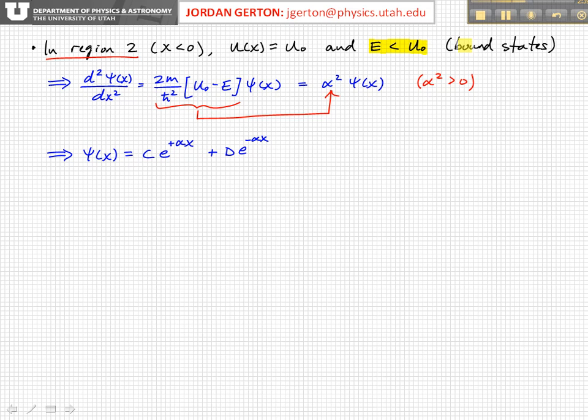So E less than U₀ corresponds to bound states. This means that when we have the time-independent Schrödinger equation here as we've rewritten it, E is going to be less than U₀, and so this term is going to be positive now. Whereas before, inside the well it's negative, now it's going to be positive, and we expect exponential functions. We set this term, 2M over ℏ² times (U₀ minus E), to be equal to α². We just make that assignment; it just helps us so we don't have to rewrite this all the time.